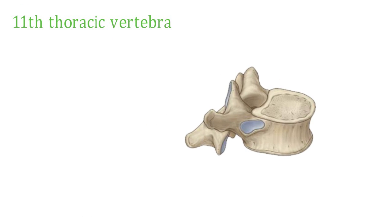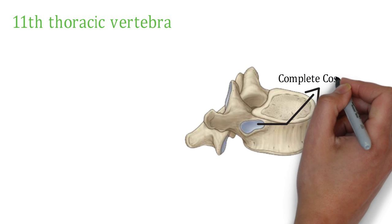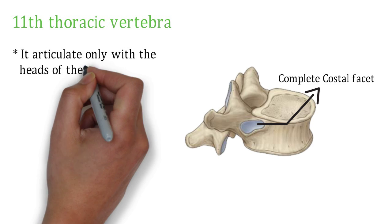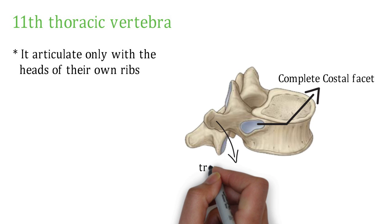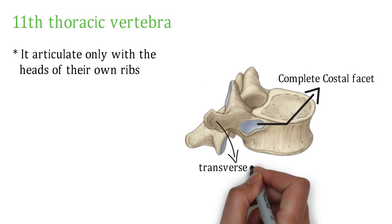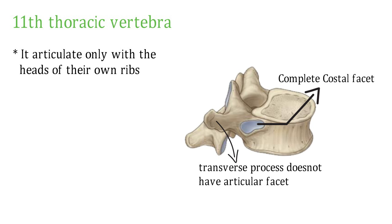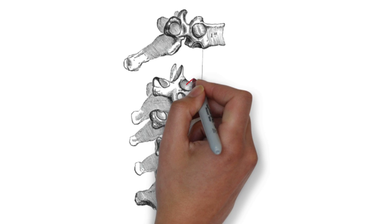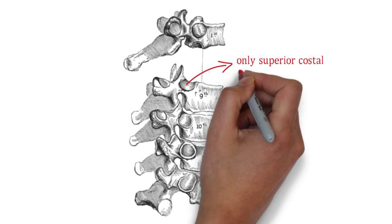The 11th thoracic vertebra, in lateral view, has a complete costal facet that articulates with only the heads of its own ribs. The main differentiating feature is that the transverse process does not have an articular facet. The 9th thoracic vertebra has only superior costal demi-facets.